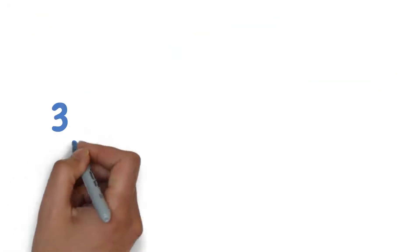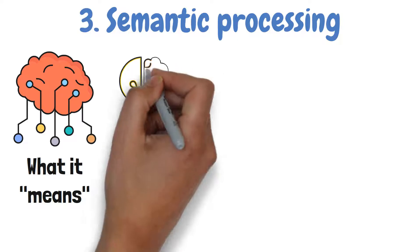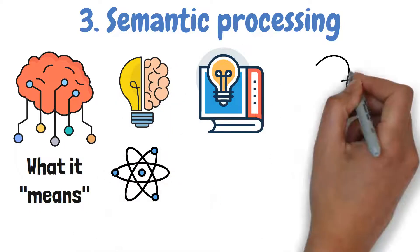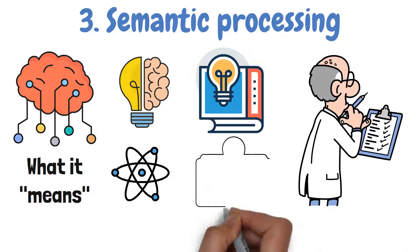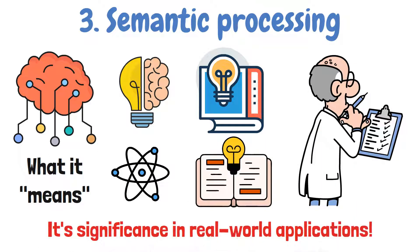The deepest level of processing is semantic processing. This involves encoding information based on what it means and relating it to similar concepts or prior knowledge. For example, when learning about a scientific theory, you might think about its implications, how it relates to other theories you know, or its significance in real-world applications.